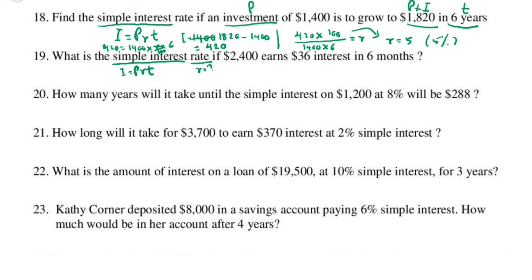P is 2,400. Interest is 36, time is 6 months. Converting 6 months to years: 6 divided by 12 is half a year. So enter everything and compute for r: 36 equals 2,400 times r over 100 times one-half.